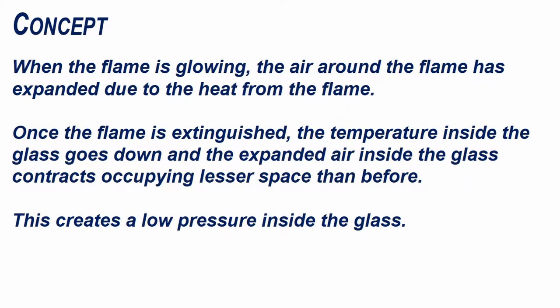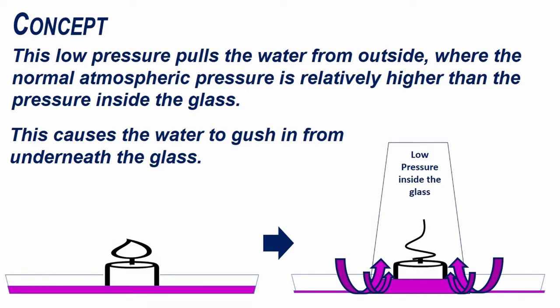When the flame is glowing, the air around the flame has expanded due to the heat from the flame. Once the flame is extinguished, the temperature inside the glass goes down and the expanded air inside the glass contracts, occupying lesser space than before. This creates a low pressure inside the glass. This low pressure pulls the water from outside, where the normal atmospheric pressure is relatively higher than the pressure inside the glass. This causes the water to gush in from underneath the glass into it.